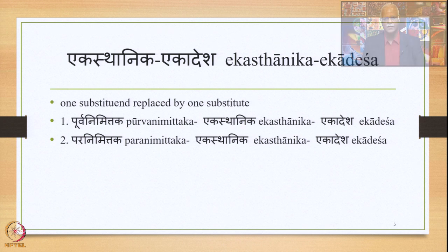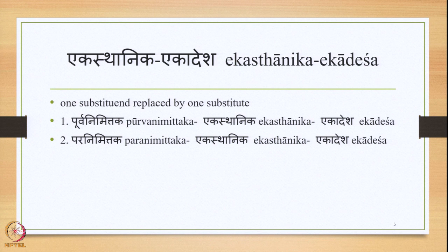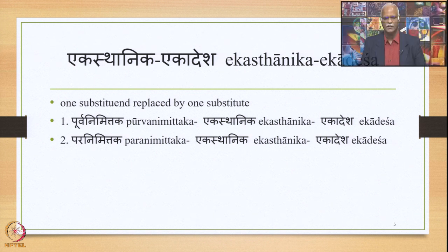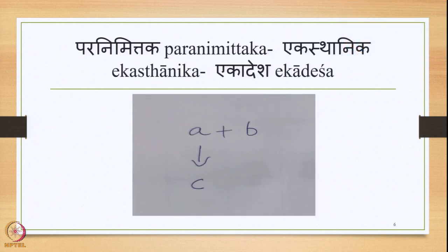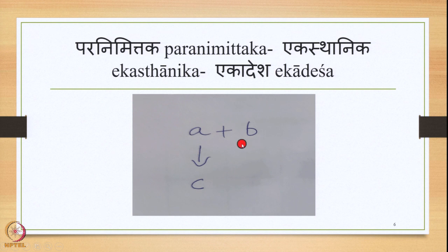Ekasthanika Ekadesha is one substituent replaced by one substitute, and Ekasthanika Dvyadesha is one substituent replaced by two substitutes. Ekasthanika Ekadesha is further classified into two: Purvanimittaka Ekasthanika Ekadesha and Paranimittaka Ekasthanika Ekadesha. Currently we are dealing with Paranimittaka Ekasthanika Ekadesha mainly. This can be described in the form of a diagram where we have A plus B in the Samhita mode, where B is the Paranimittaka, A is Purva, and in the environment of B, A is substituted by C.